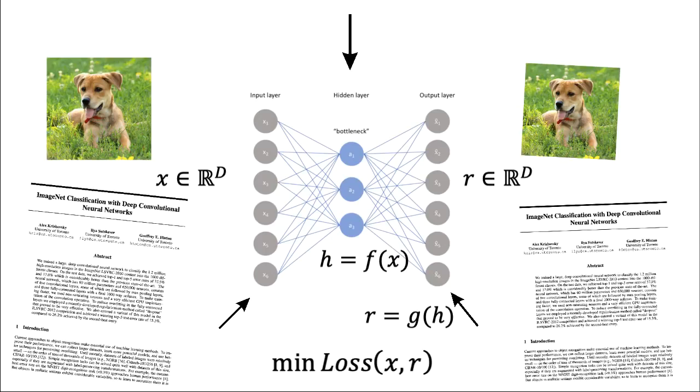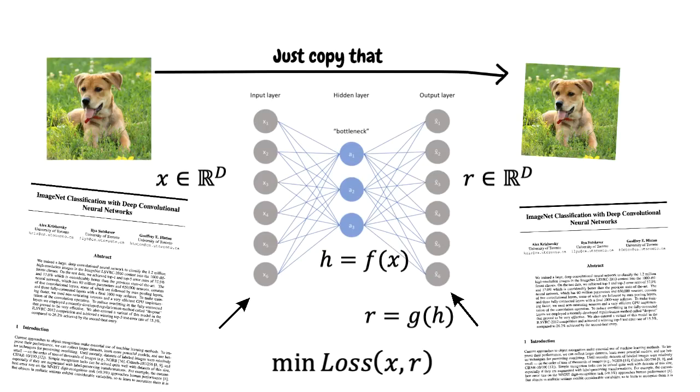However, there is a problem. A trivial solution would be a zero loss if we just copy the images. But this would mean that the latent layer doesn't really learn anything, which is useless. One way to work around this is to constrain the properties of this hidden layer, these properties being the size and activation.